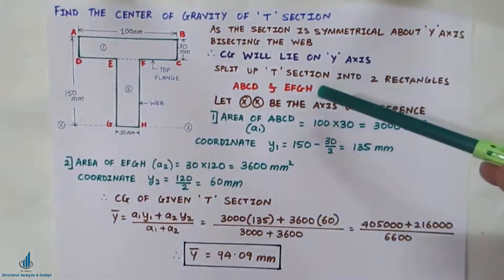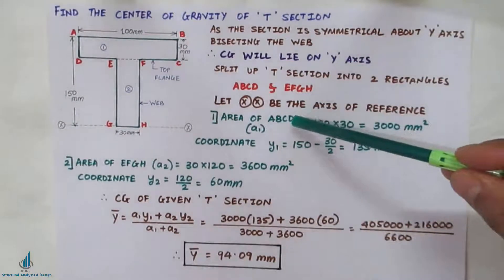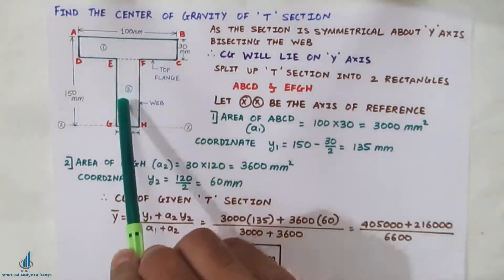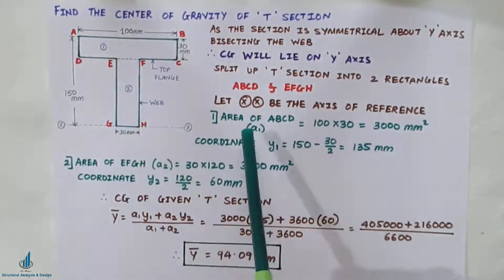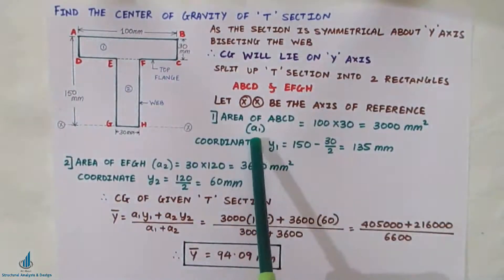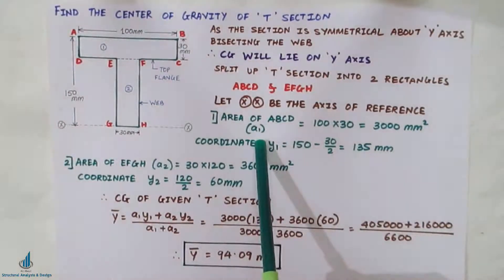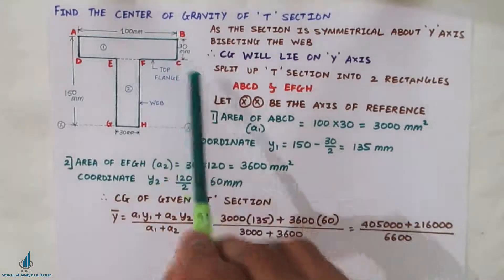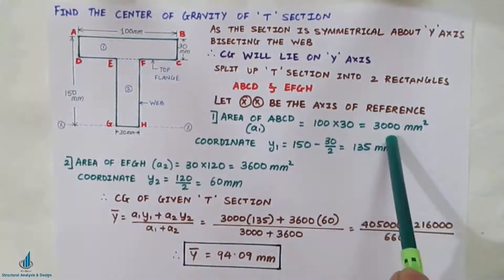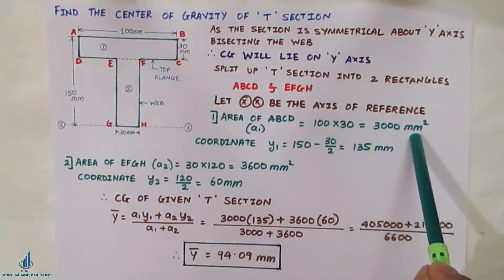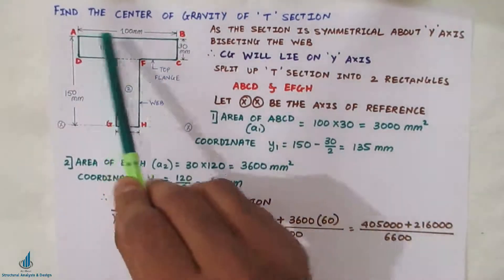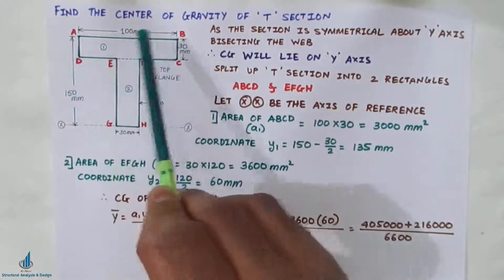First, we find the area of the first rectangle ABCD, marked as Rectangle 1. The area of ABCD, denoted as a₁, is breadth × depth = 100 × 30 = 3000 mm². The coordinate y₁ is the coordinate of this rectangle ABCD.